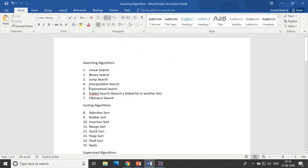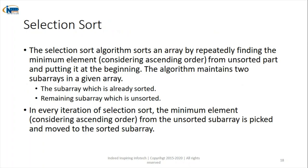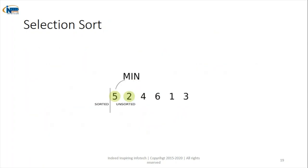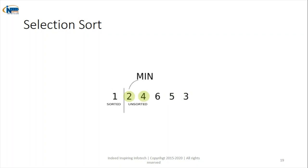Moving to sorting algorithms — the eighth algorithm is selection sort. In selection sort, we pick up the minimum element from the group and put it into a new sorted array. First, 1 is the smallest so it is placed first. Then we search again — 2 is the minimum among the remaining — so 2 is placed next. This is how selection sort works.